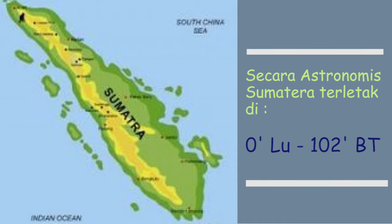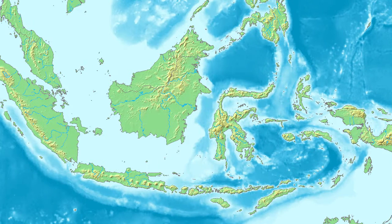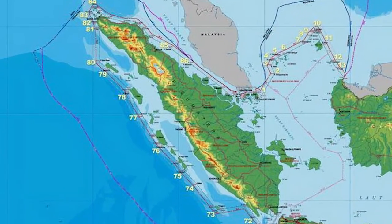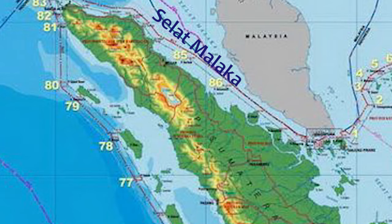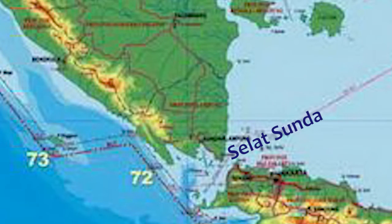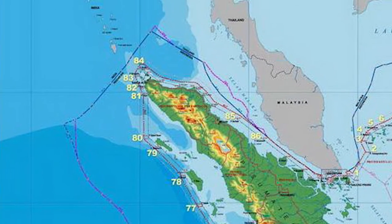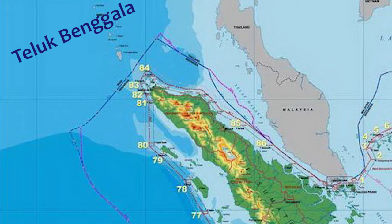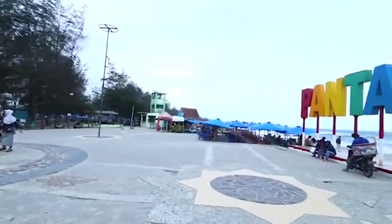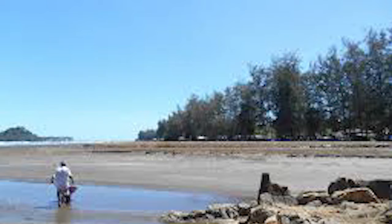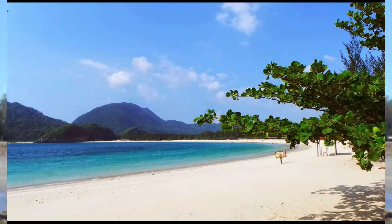Secara astronomis, pulau yang memiliki nama lain Pulau Emas ini terletak di 0 derajat lintang khatulistiwa dan 102 derajat bujur timur. Secara geografis, Pulau Sumatra berada di sebelah barat gugusan Pulau Nusantara. Di Sumatra terdapat banyak pantai, antara lain Pantai Air Manis di Sumatra Barat dan Pantai Lampu di Aceh.